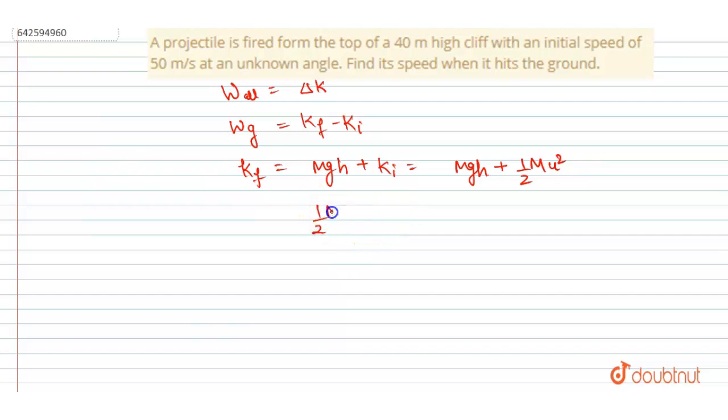This equals final kinetic energy. So just put the values now. The m will get cancelled out. So the speed with which it will hit the ground can be calculated from here.